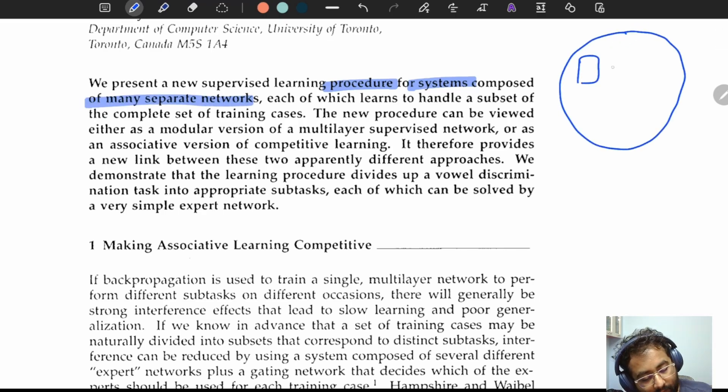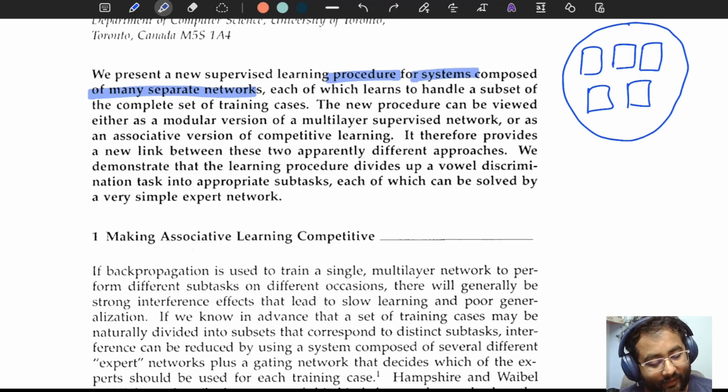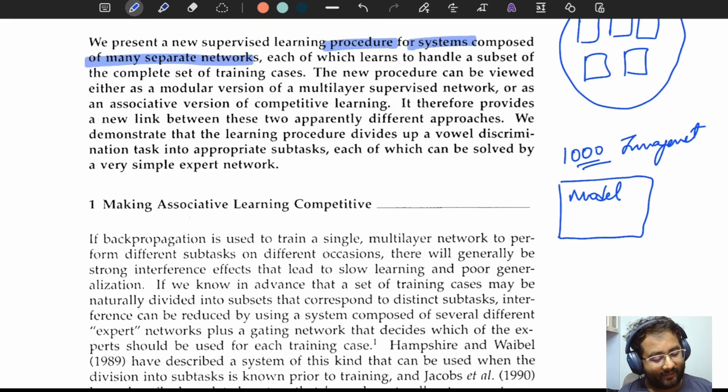The systems are composed of many separate networks. Separate means that the networks are not interconnected, and each network learns to handle a subset of the complete set of training cases. Suppose that the task at hand is an image classification task and there are a thousand classes as in ImageNet. In the usual deep learning setup there would be a model which would learn to classify all these thousand classes.